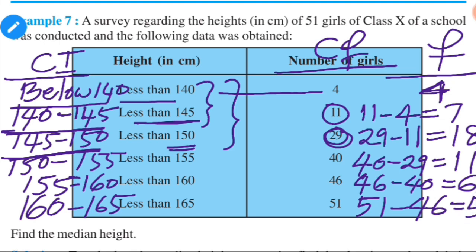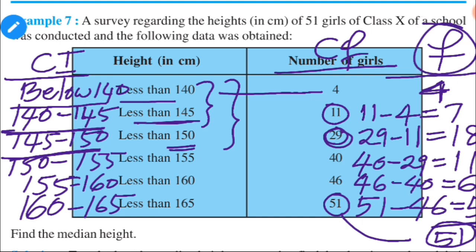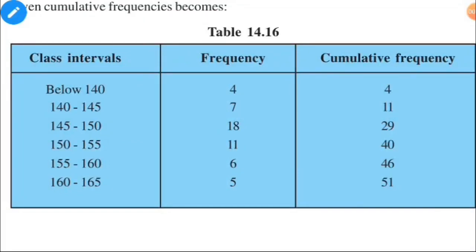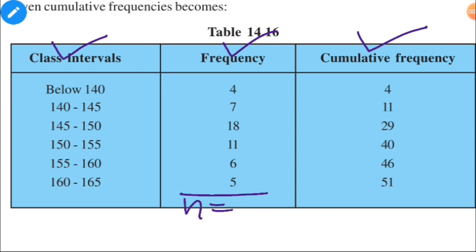Adding all the frequencies gives 51, which equals the last cumulative frequency. Now we have class intervals and their corresponding frequencies. To find the median, we set up a table with class intervals, frequency, and cumulative frequency. First, we find n — the sum of all frequencies — which is clearly 51.